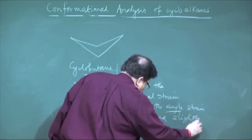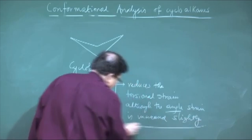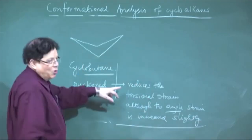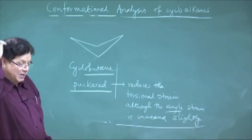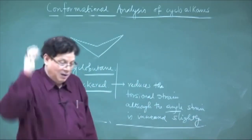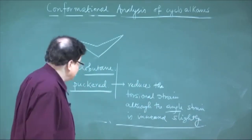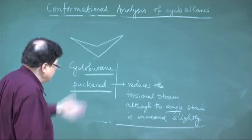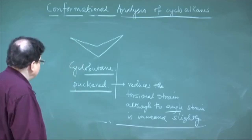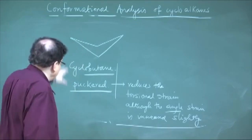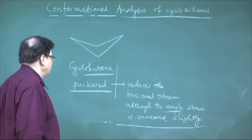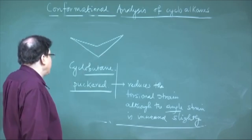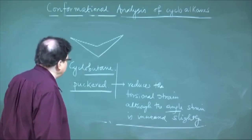Overall it gains more by reducing the torsional energy at the expense of increasing the angle strain. This is the shape of cyclobutane. How much puckering is taking place?